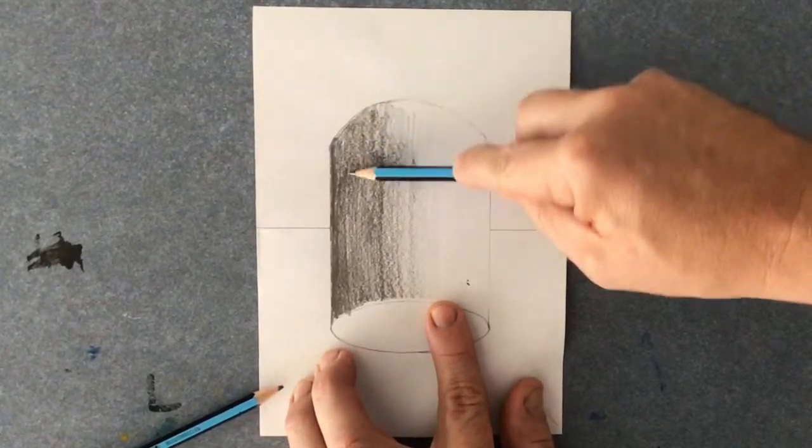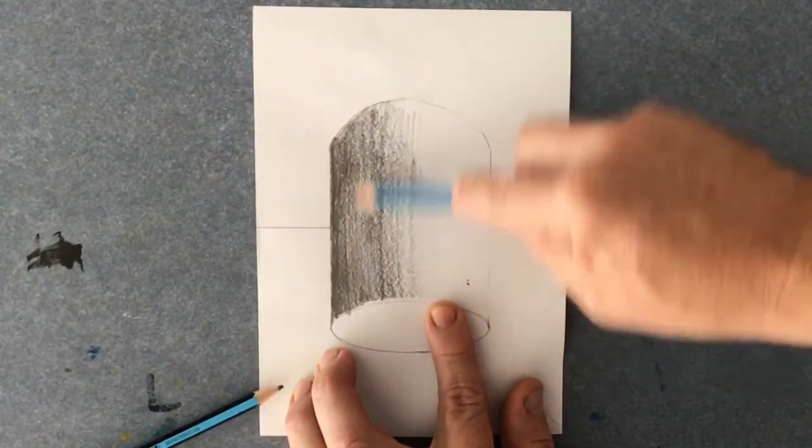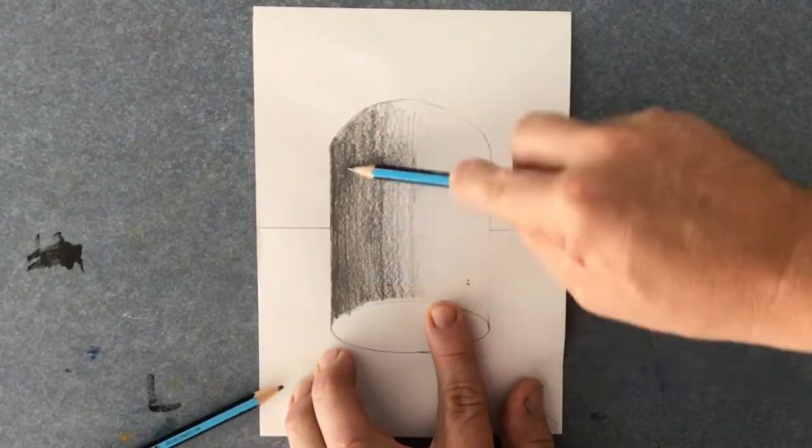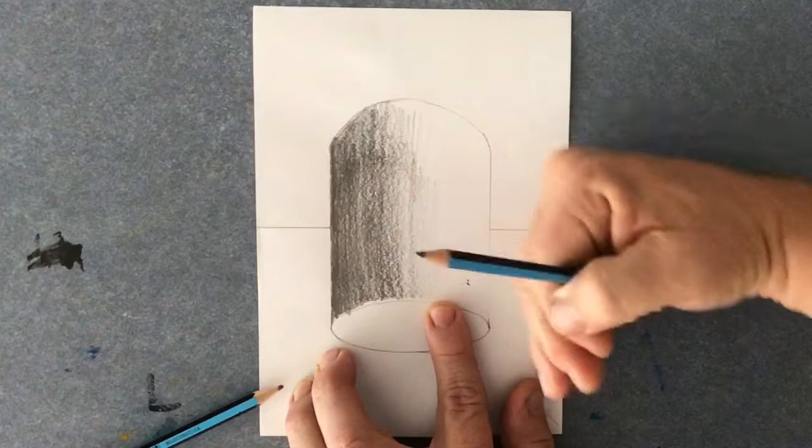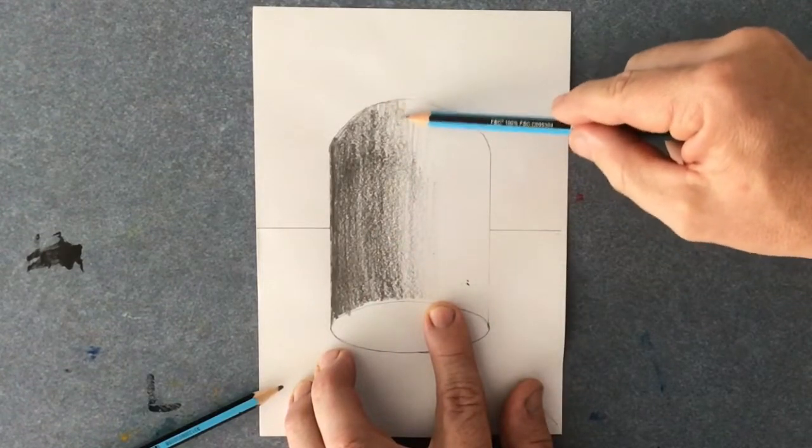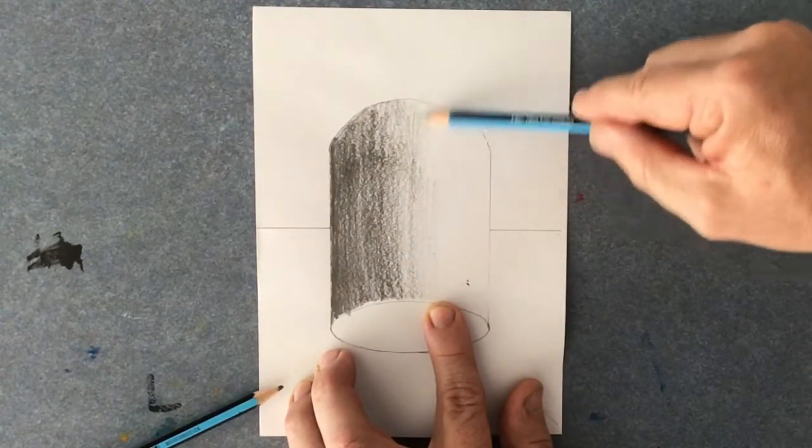This is shading. I'm doing it fast to sort of show you how to do it. The effect I'm after is trying to get it to go from dark to around to lighter around there and I'm just going to put some light shading on here.